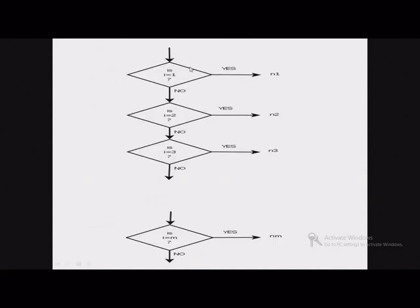This is the diagrammatic representation of the computed go-to. If i equals 1, control is transferred to statement number n1, referring to the syntax. This is how we can represent the computed go-to using a flowchart.